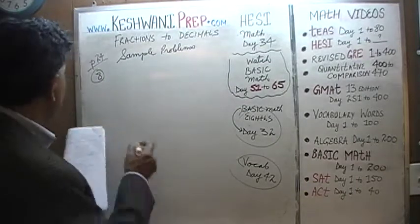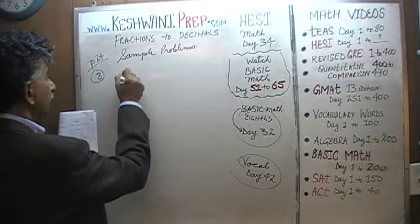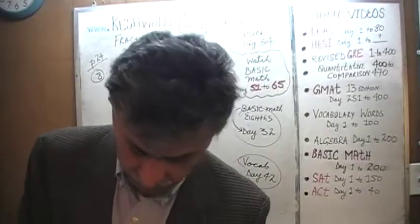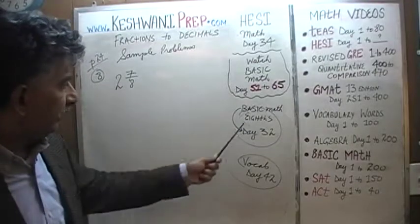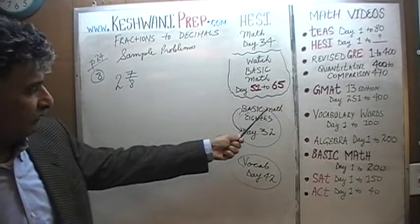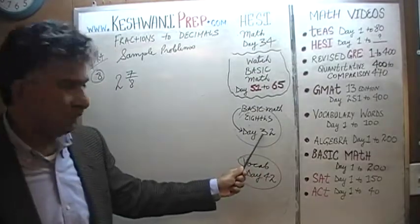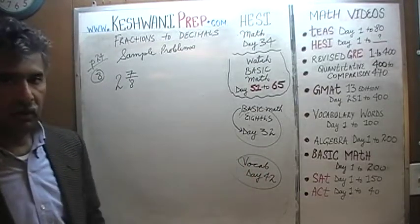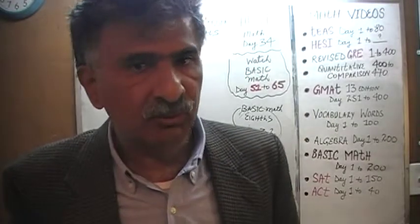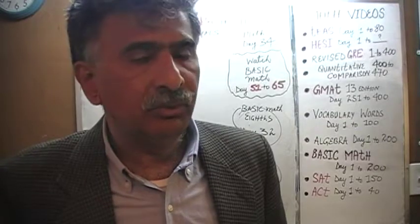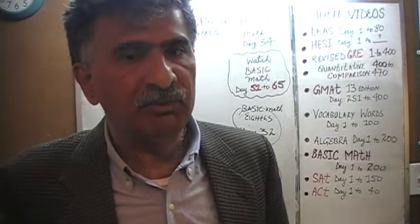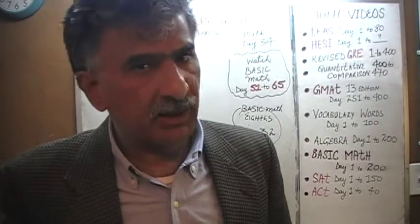Number 8 is asking us to convert 2 and 7/8 into decimals. You have to know your eighths. We learned our eighths in the basic math series on day number 32 — watch that video. You must know your eighths, your fourths, your fifths, your tenths, and your thirds. These are essential, vital, fundamental bits of information that you must know by heart.